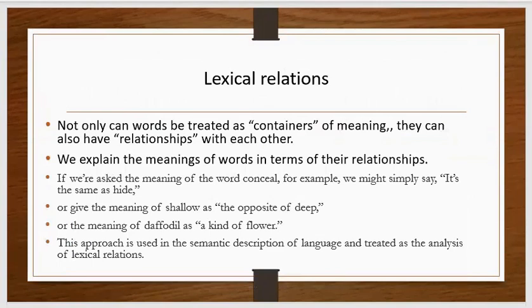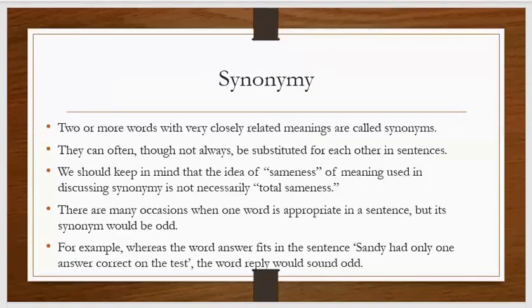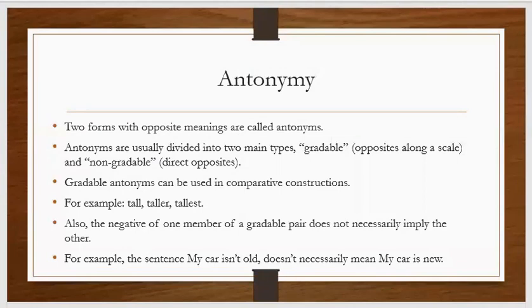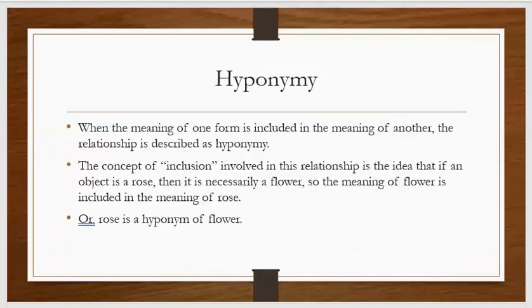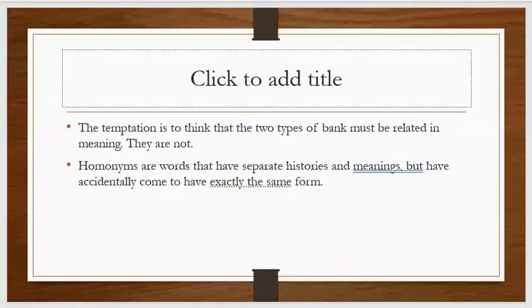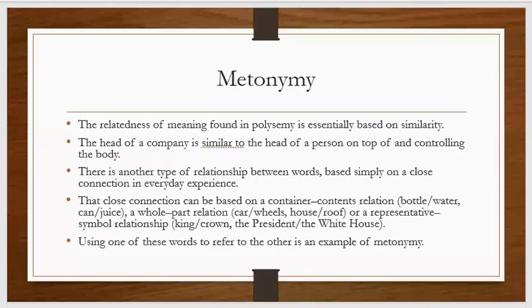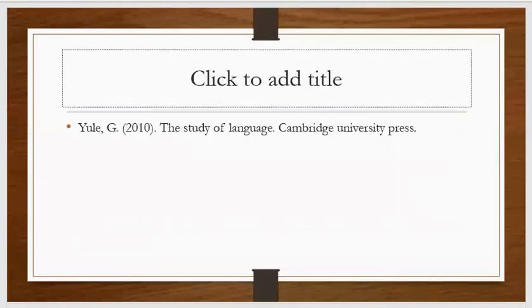To summarize what we have discussed: we covered lexical relations — synonymy, antonymy, hyponymy, prototypes, homophones and homonyms, polysemy, how these can be used for wordplay, metonymy, and finally collocations.